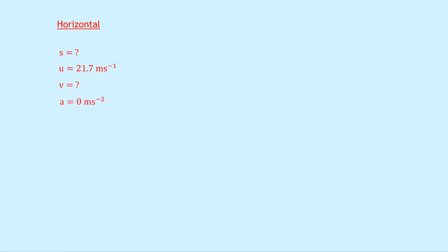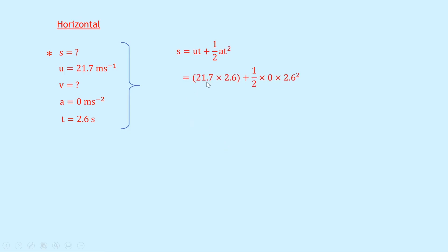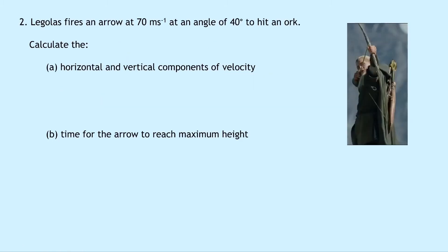For the horizontal motion: s is what we're trying to find; u is 21.7 meters per second (the horizontal component from part a); a is 0 meters per second squared (always the case horizontally); and t is 2.6 seconds. Using s equals ut plus a half at squared: s equals 21.7 times 2.6 plus a half times 0 times 2.6 squared. The second term disappears, giving s equals 56.4 meters.